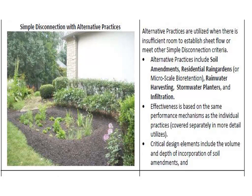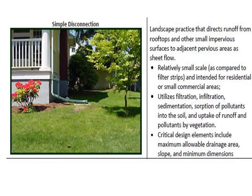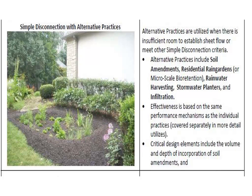An enhanced version of roof disconnection is a rain garden — instead of just flowing to grass, a small reservoir is built near the roof drain. In Huntington we have clay soils that don't absorb water well, so in a rain garden you excavate the poor soil, put a bed of gravel and sand underneath, add high-infiltration-capacity soil, and plant vegetation to further promote infiltration down into the ground.